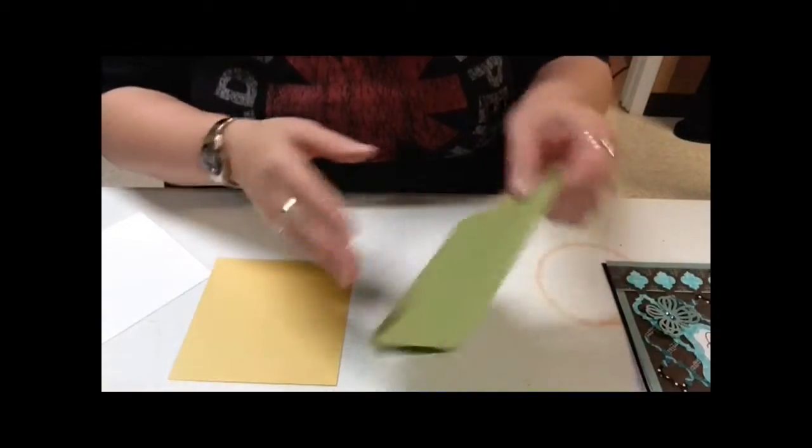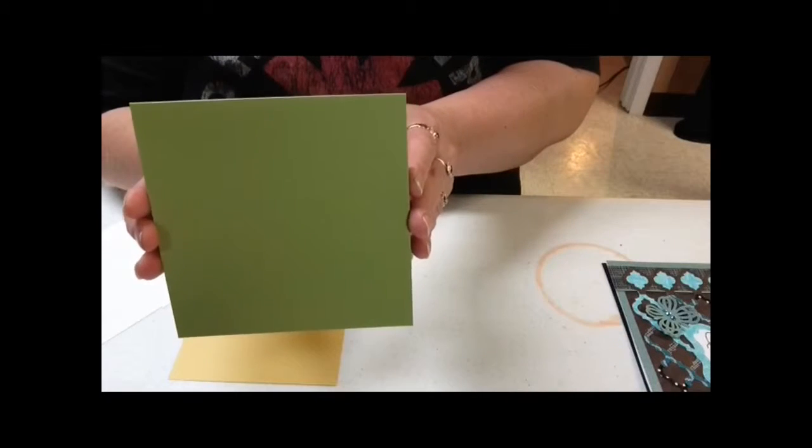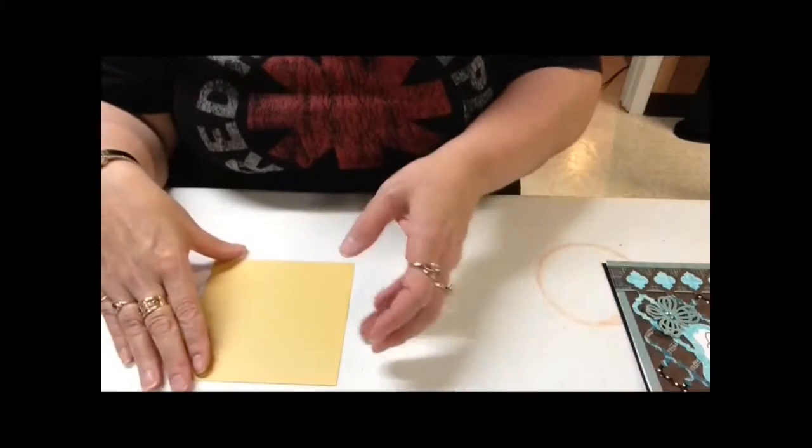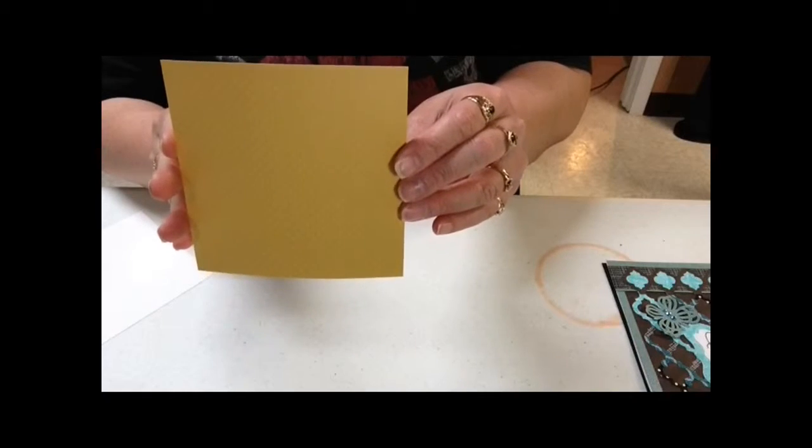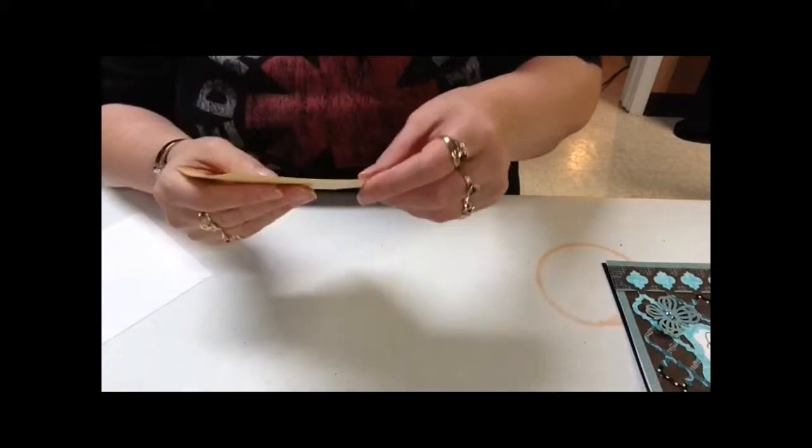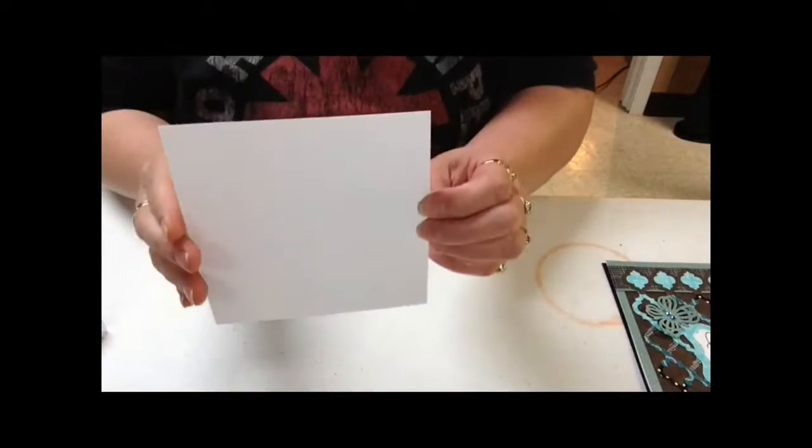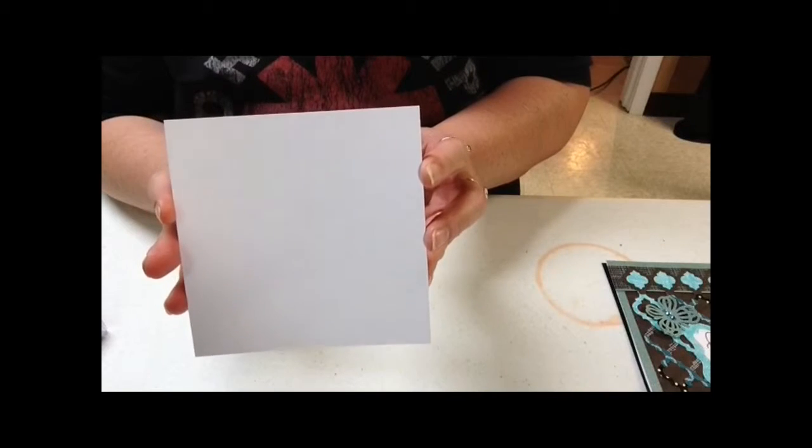I started with the card base. This is a five and a half by five and a half square card base. I've also cut a square five and a quarter by five and a quarter. This is going to go on top of my card base. And I have cut a piece of plain white paper that's five and a half by five and a half.